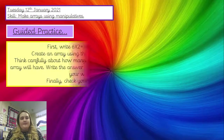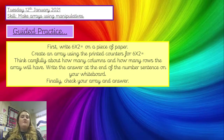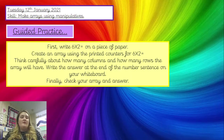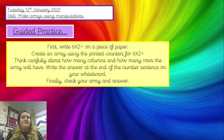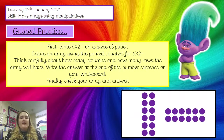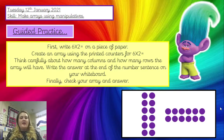On to our guided practice. I would like you to write six times two on a piece of paper, and use your printed counters or anything else you've chosen to create your array for six times two underneath your number sentence. Think very carefully about how many columns and how many rows your array will have. Once you have completed your array, count them and write the answer at the end of the number sentence. Check your array and answer. We have got six going down — one, two, three, four, five, six — and two going across. Check your array against this and give yourself a tick if you're right.